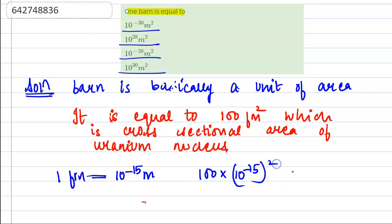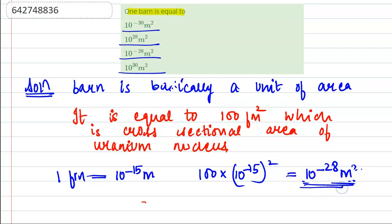That is 10 to the power minus 30 into 100, which is equal to 10 to the power minus 28 meter square. Therefore, one barn is equal to 10 to the power minus 28 meter square.